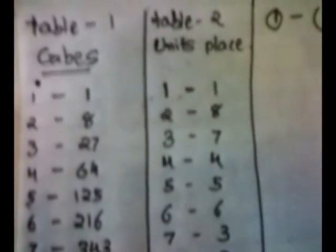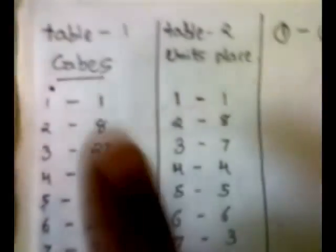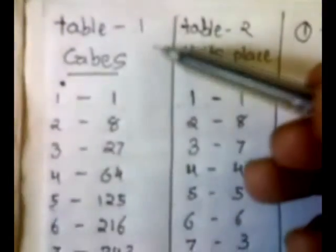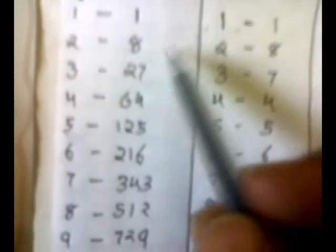In order to find out the cube root of any number, just follow these two tables. Table number one contains the cubes of one to ten. All you need to remember is these cubes. One's cube is one, two's cube is eight, three's cube is twenty-seven, and ten's cube is one thousand.